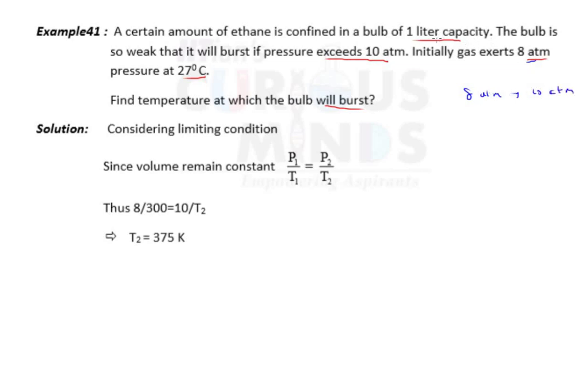And volume is fixed, one liter capacity. So whenever volume is fixed and if you increase temperature, pressure will increase, right? So we will exceed this by increasing the temperature. Because P1 by T1 is P2 by T2 means pressure is directly proportional to temperature. And when you increase temperature, the pressure will increase.